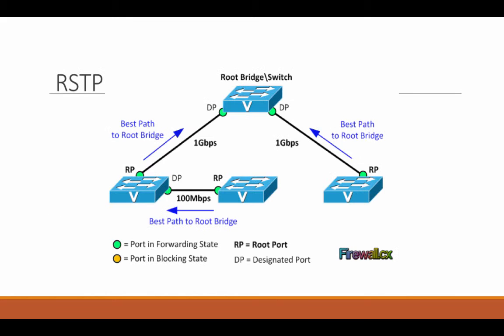Now we have RSTP, Rapid Spanning Tree Protocol. One big disadvantage of STP is low convergence, which is very important in a switched network. To overcome this problem, in about 2000-2001, the IEEE introduced the evolution of the Spanning Tree Protocol — Rapid Spanning Tree Protocol — which significantly reduces convergence after a topology change occurs in the network.